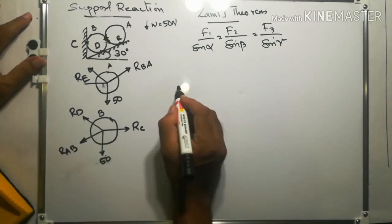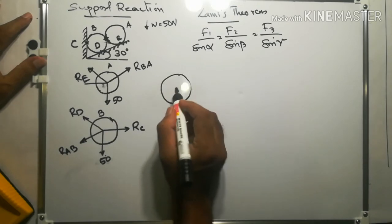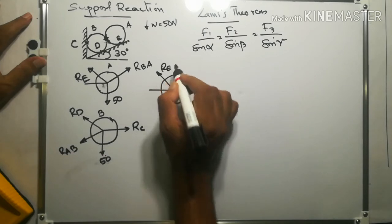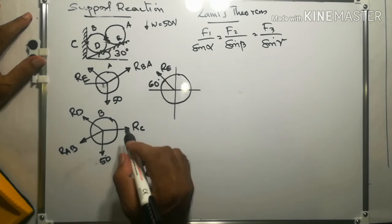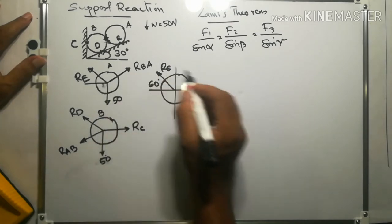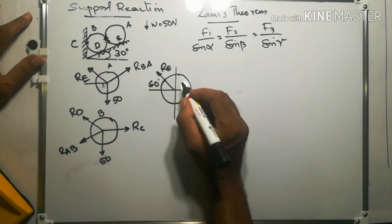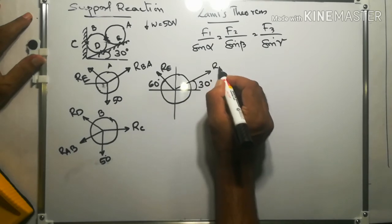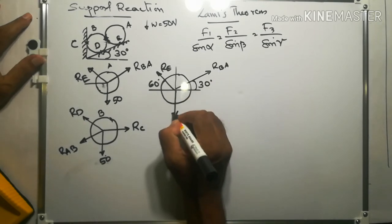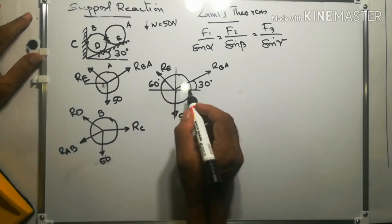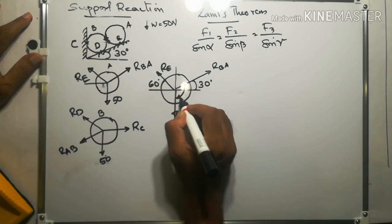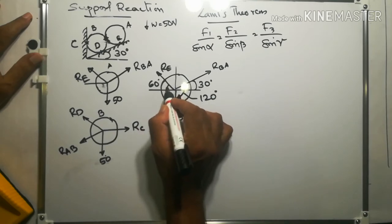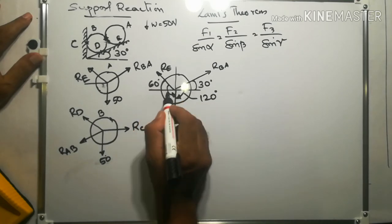Drawing the free body diagram with angle values: RE acts at 60 degrees. RBA will be parallel to the inclined plane, that is at 30 degrees. W acts vertically downwards at 50 Newton. The angle between W and RE is 90 plus 30 equals 120 degrees, and the angle between RE and RBA is 60 plus 90 equals 150 degrees.